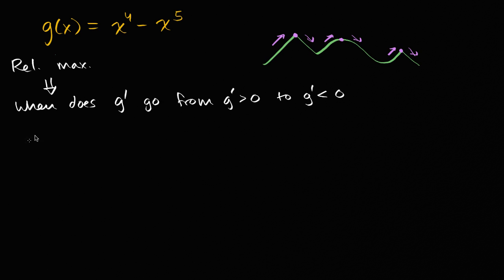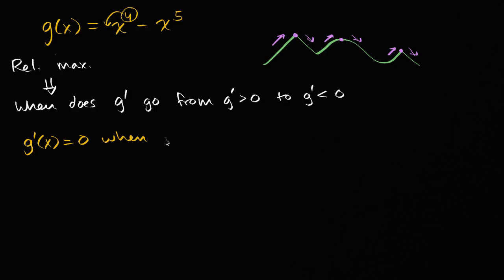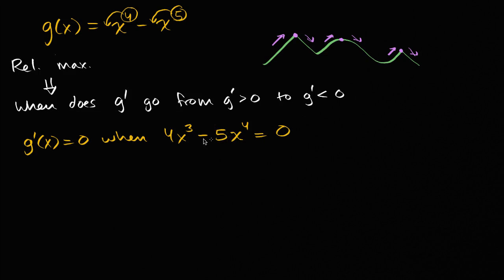Let's think about where g prime of x equals zero. We're going to leverage the power rule. G prime of x equals four x to the third power minus five x to the fourth, set equal to zero. We can factor out an x to the third, so we have x to the third times four minus five x equals zero.